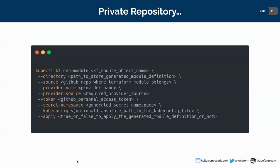This is for the private repository, which is exactly the same as the public repository command. Just a couple of fields are different: `token`, `secret namespace`, and `kubeconfig`. The token is a personal access token for accessing your private repository. The secret namespace is used when you apply this command — the QFIRM CLI will generate a Kubernetes secret where it stores that personal access token, and you can specify which namespace that secret will be in (the default is the default namespace). The third difference is `kubeconfig`, which is optional — you can provide your absolute path to the kubeconfig file. The rest of the flags are the same as the public repository.